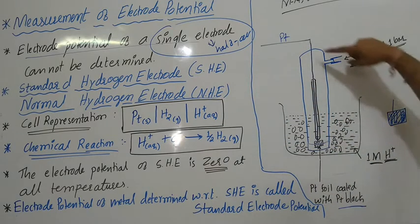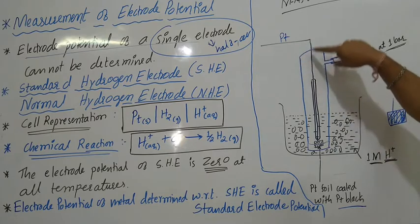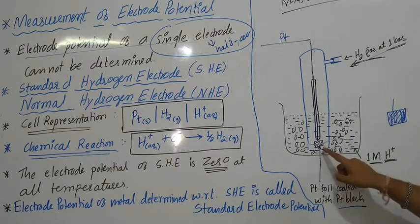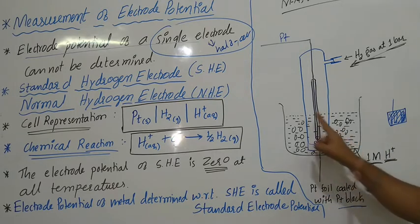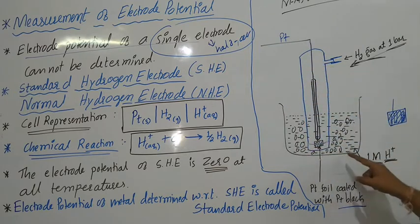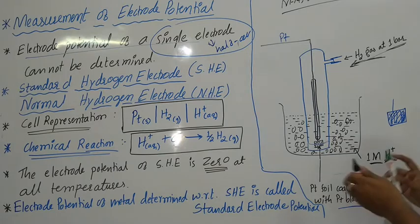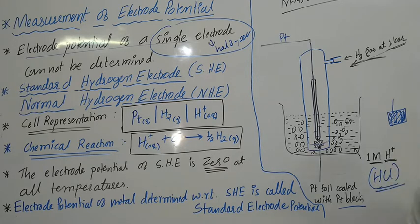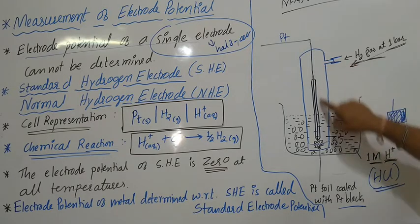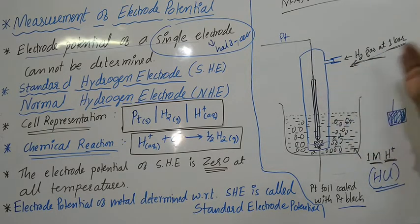To summarize: the standard hydrogen electrode consists of a platinum wire attached with a platinum coil, which is coated with platinum black. This electrode is dipped in a solution containing one molar concentration of H⁺ ions. Generally, 1M HCl is taken, which provides one molar H⁺ ions.